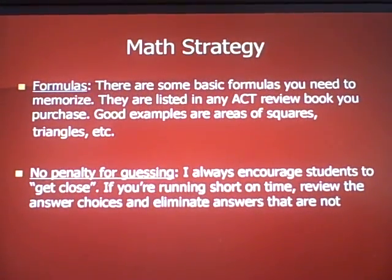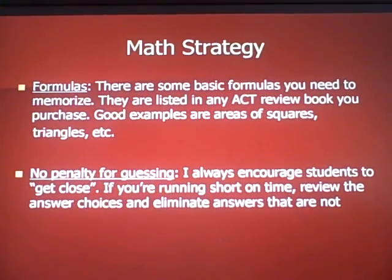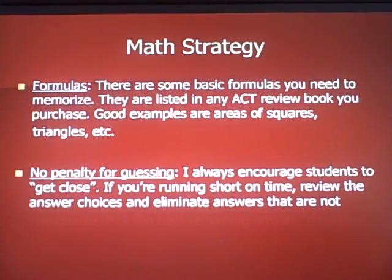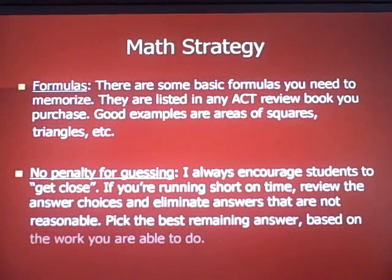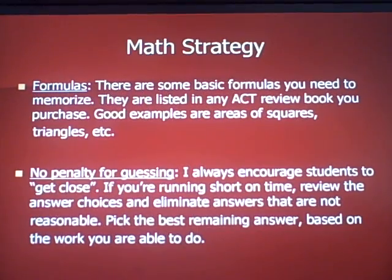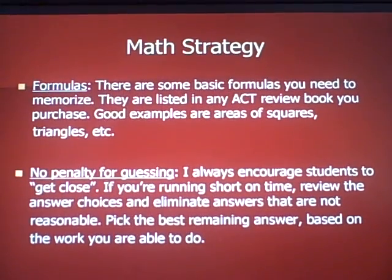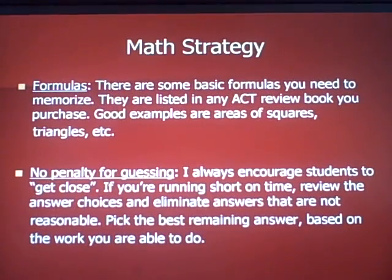Remember that we're trying to maximize correct answers, not minimize wrong ones. If you're three steps into a four-step problem and you're stuck, skip it and come back later. If you're running short on time, review your answer choices and eliminate the ones that are not reasonable — the ones far off from your estimated answer. Pick the best remaining answer based on the work you've already done. If you're stuck between 300 and 350, pick one and move on, because if you've come up with something close to those numbers, one is likely correct.